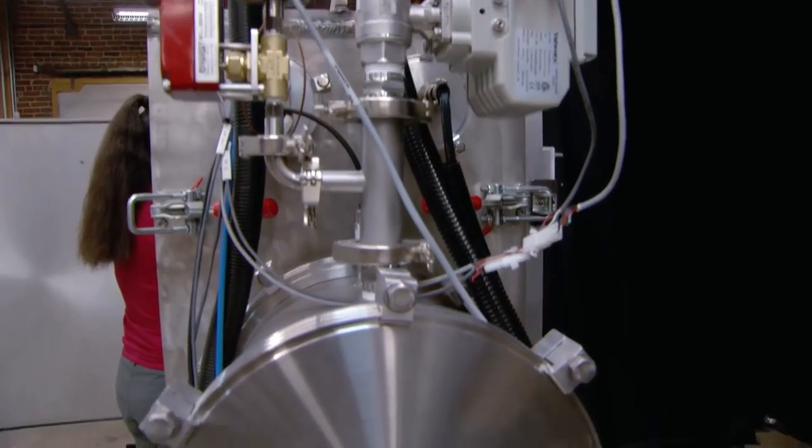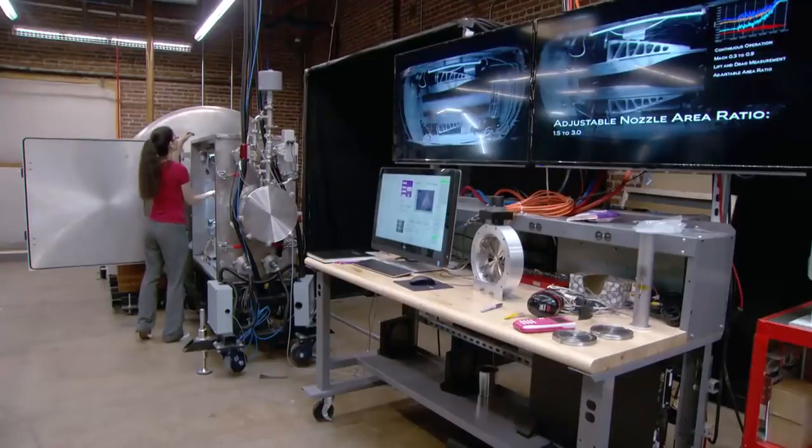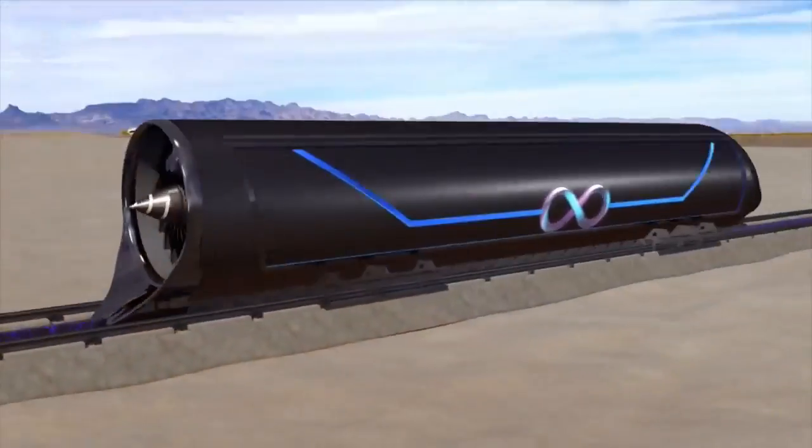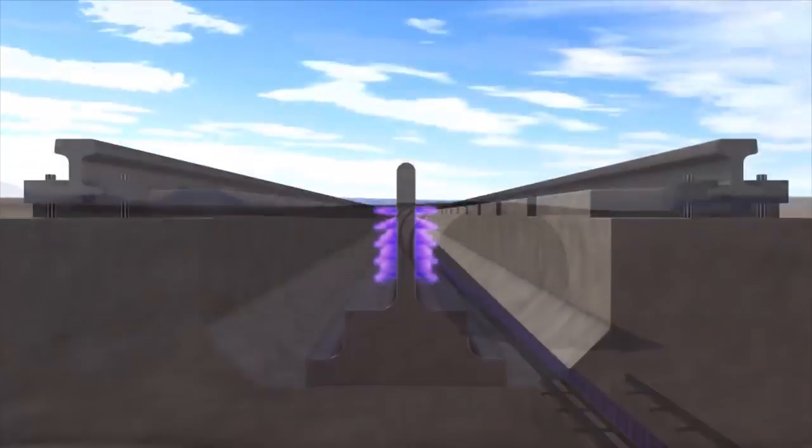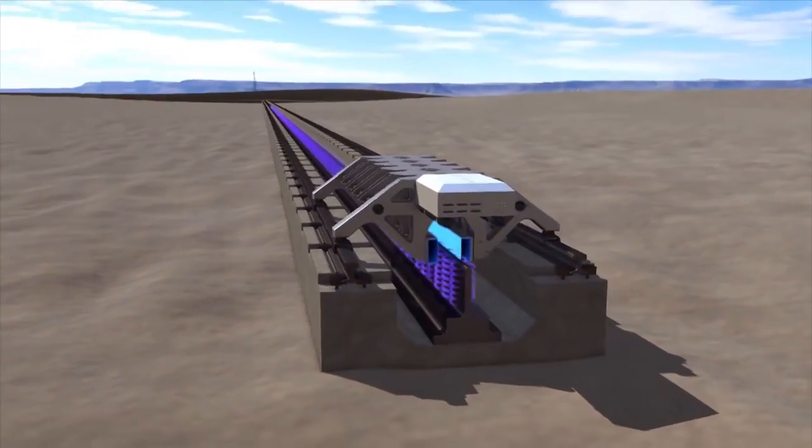It's a very simple construct. Start with a tube. We remove a lot of pressure from that tube, so any object moving through it has much less resistance. Then take a pod and put it inside that tube. Use an electric motor to propel it, levitate it using magnets, and as a result of those combination of factors, the pod can go really fast.